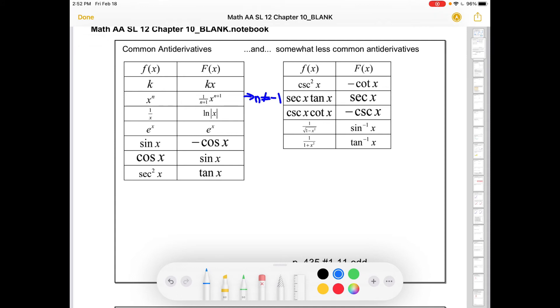So here are a bunch of rules. Some of them are beyond the scope of the Math AASL course. But the anti-derivative of a constant is that constant times x. x to the n, this is the most important one. Power goes up by one, and the flip of the new power goes in front. That only works if n is not equal to negative one.